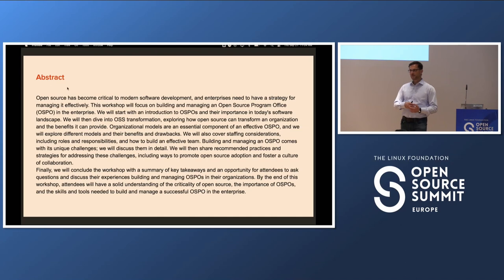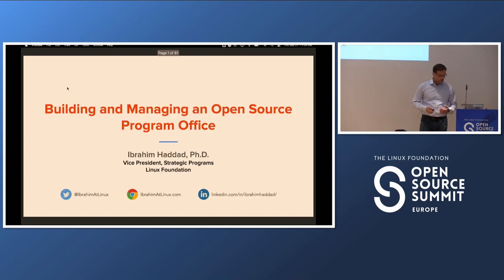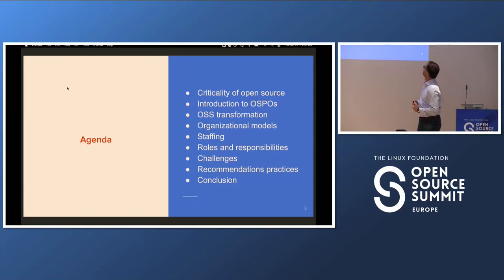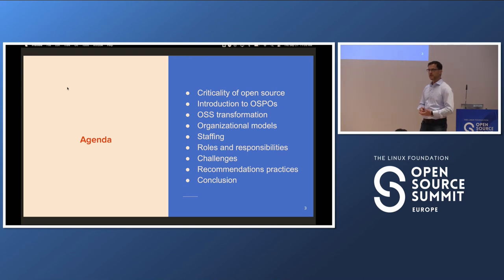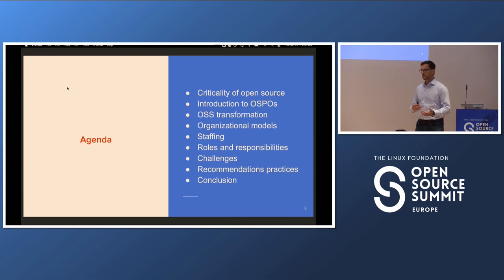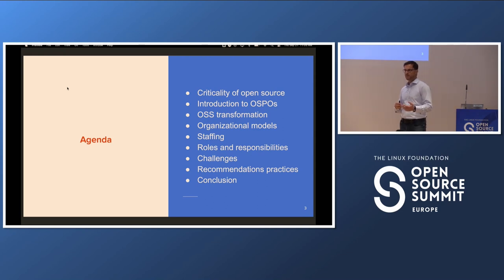Today's session covers a lot of topics. Basically, how critical open source has become to how we build software today. There are a lot of cool graphics — all of these are imported from Linux Foundation research papers. If you wish to reuse them, you can go to the Linux Foundation research website. We've published a lot of OSPO papers — you can download the infographics and use them. They're publicly available for free reuse.